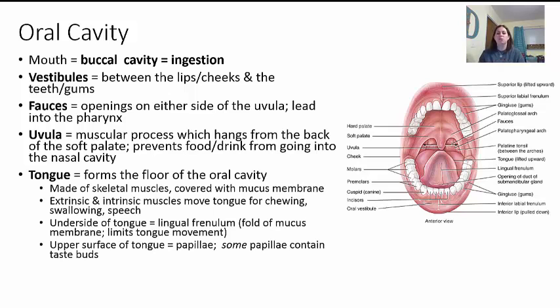The tongue forms the floor of the oral cavity. It is made of skeletal muscles covered with a mucous membrane. There are extrinsic and intrinsic muscles that move the tongue to allow you to chew, swallow, and even speak — your tongue has to move in different ways when you make different sounds. The underside of the tongue has the lingual frenulum, a fold of mucous membrane that limits the tongue's movement and determines how much you can stick your tongue out. Individuals who are tongue-tied may need to have it clipped to help them speak properly. The upper surface of the tongue has papillae on it, some of which contain taste buds — we'll talk about how those work in the special senses chapter.